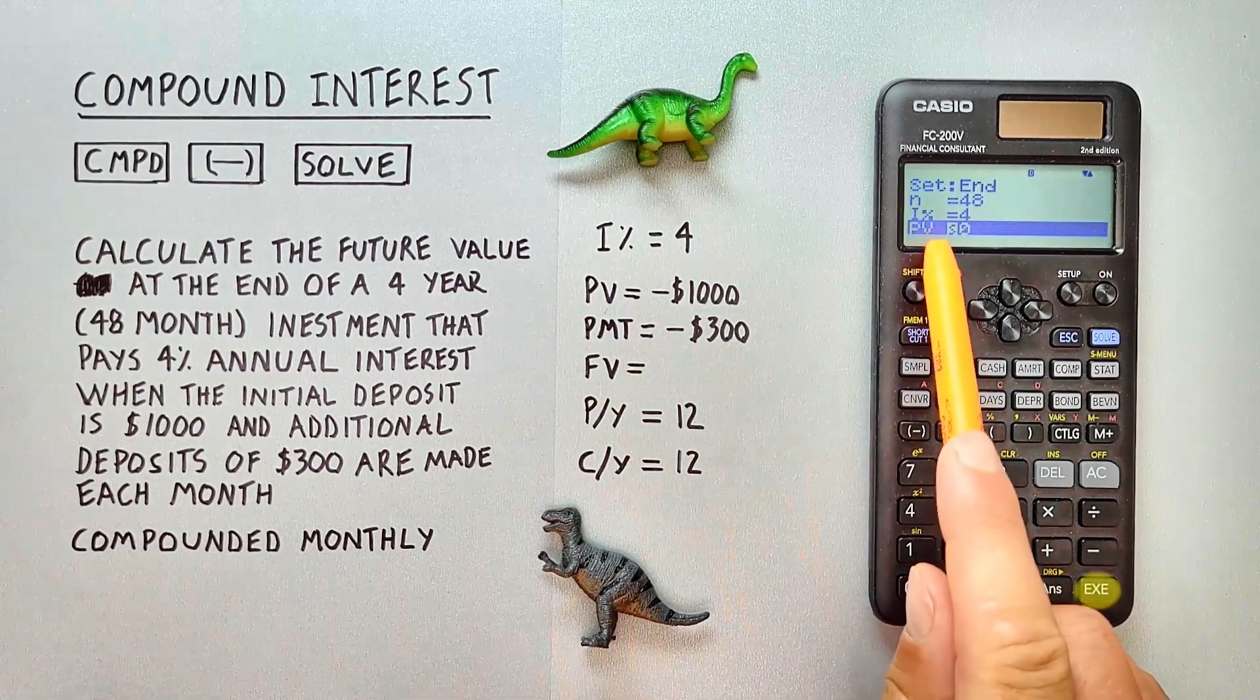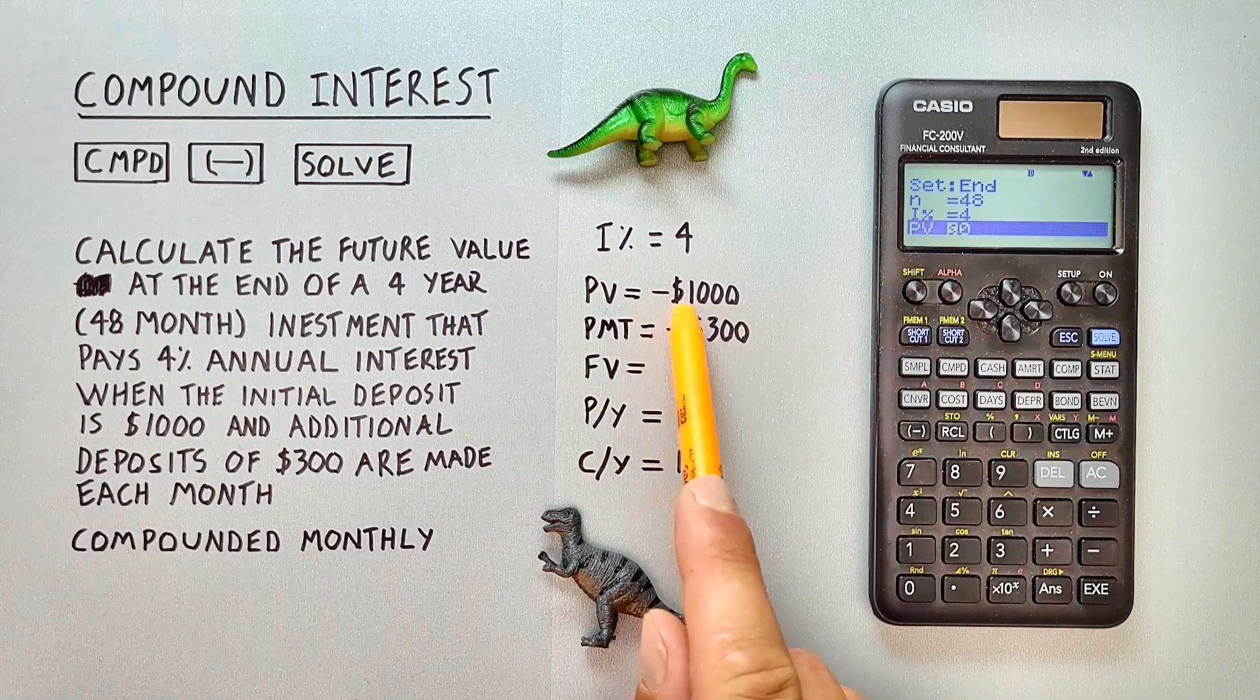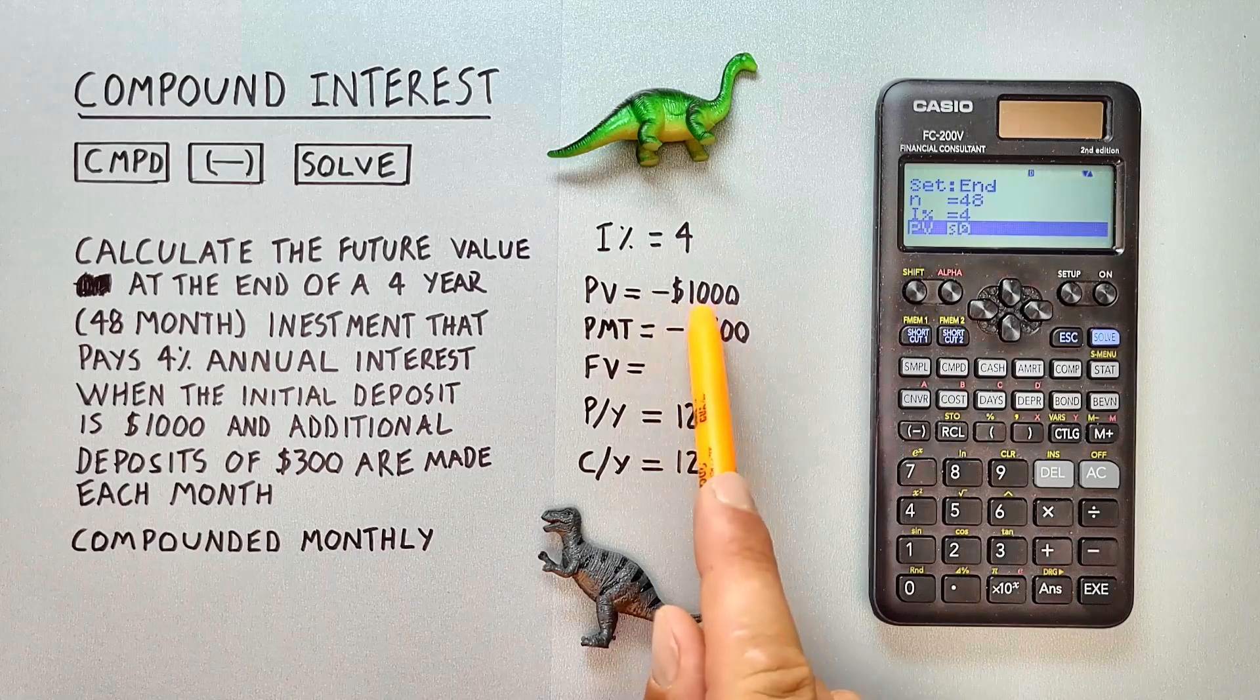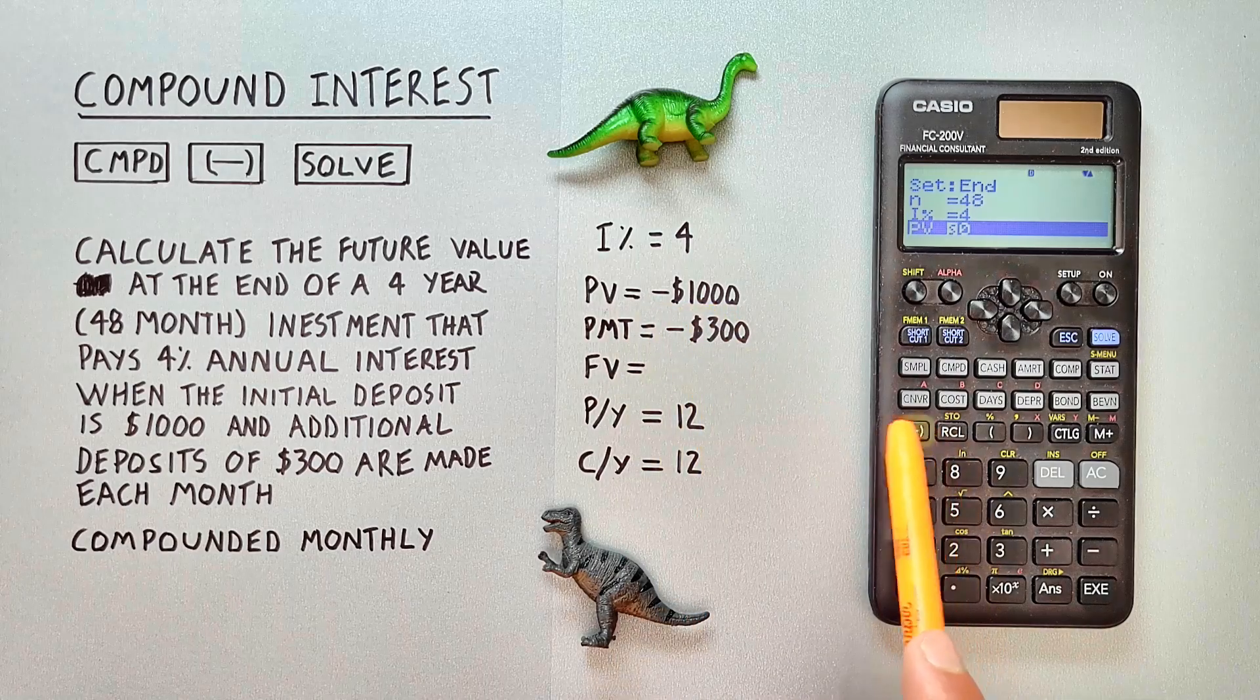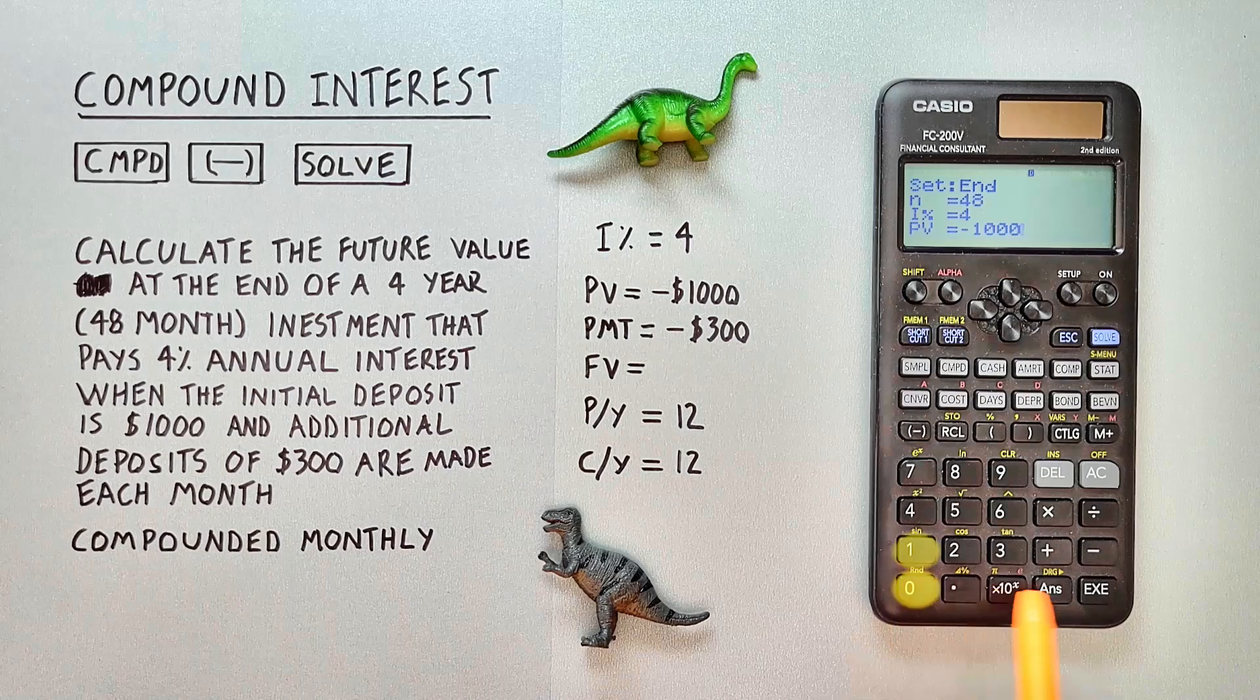Our PV or present value, that was $1,000. But it's important to enter this as a negative. So first we hit the negative key and then the 1000 and then hit EXE.